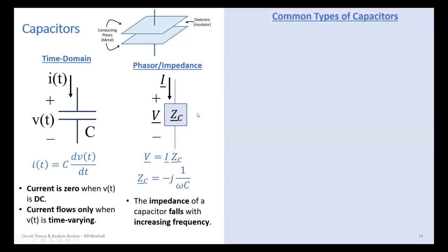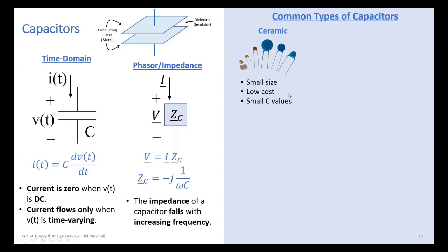Now, common types of capacitors — moving away from cartoons to real components. Ceramic capacitors are small and cheap, typically small capacitance values, from a few picofarads up to maybe 10,000 picofarads. They're non-polarized, so you can apply DC voltage in either direction. Electrolytic capacitors are larger capacitance values — for example, 4,700 microfarads in a reasonable size. They consist of metal foil rolled up with an electrolyte forming the insulator. They have large tolerance, typically ±20%, and they drift.